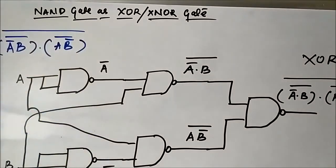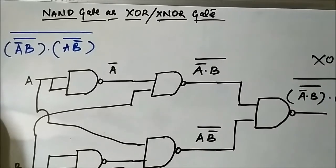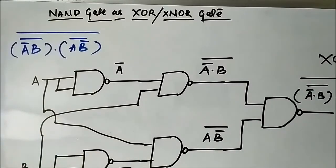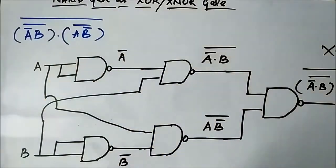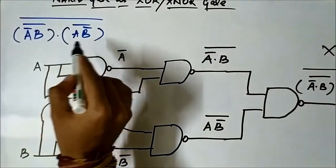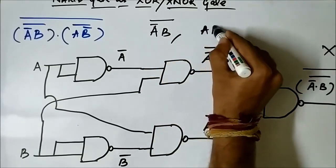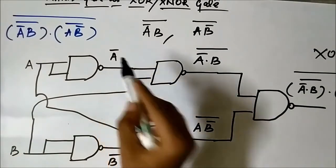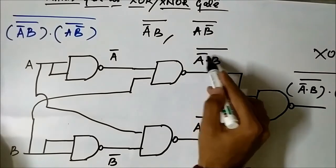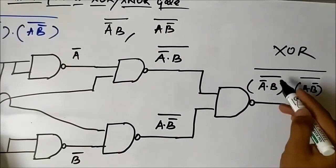The objective whenever you get any expression and you have to implement it using a universal gate — NAND gate or NOR gate — the first thing is to convert the expression into a format which is easy to implement using that gate. Here we are using NAND gate, so we converted the XOR expression into product form using De Morgan's theorem. Next, identify the individual isolated signals: first generate (A̅B)̄, then (AB̅)̄, then perform the final NAND operation and we got the required XOR output.